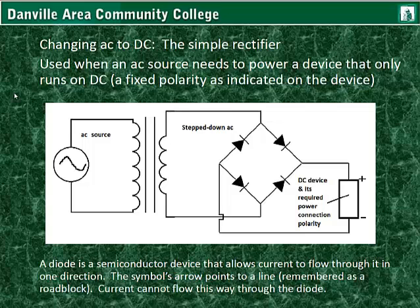Freezers, blow dryers, fans, and light bulbs can also run on AC. The current can pass through those devices in either direction so long as there is a potential. Electronic components work by use of semiconductors and other devices, and they must have a DC source similar to a battery.